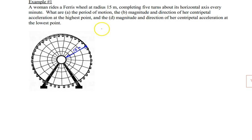So let's start off with what we know. What are we given here? We're given a radius of 15 meters. We are also given that it does five turns. So I'll just write five turns. That's about all.